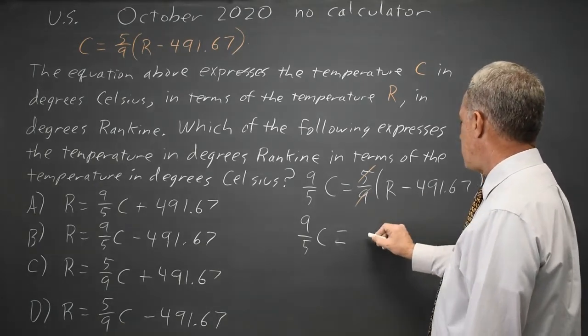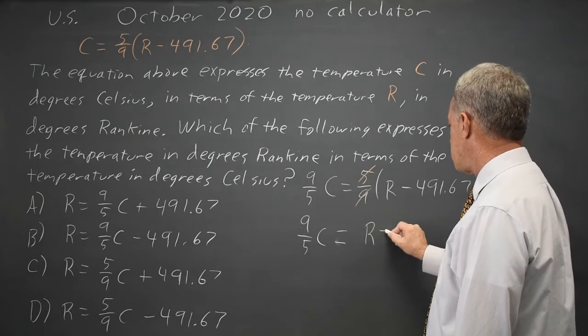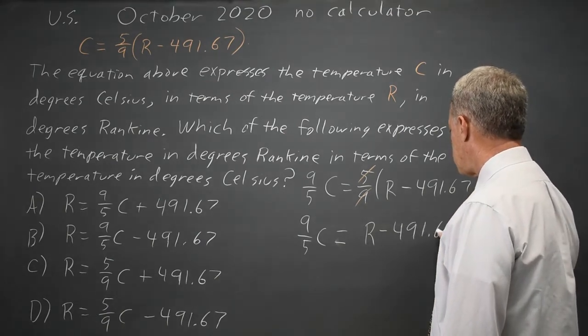So, I have 1 times this quantity. I can just write the quantity without parentheses. R minus 491.67.